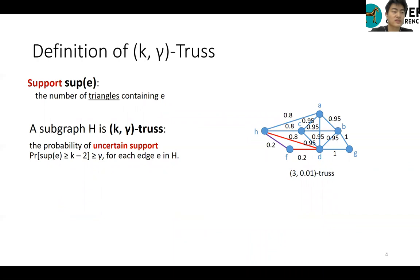Here, we present a formal definition of k-gamma-truths. The uncertain support of E is defined as the number of triangles containing E. Given an uncertain graph and two numbers k and gamma, a subgraph is a k-gamma-truth of G if and only if it is the largest subgraph, such that each edge has the probability that its uncertain support is greater than or equal to k-2, no less than gamma.